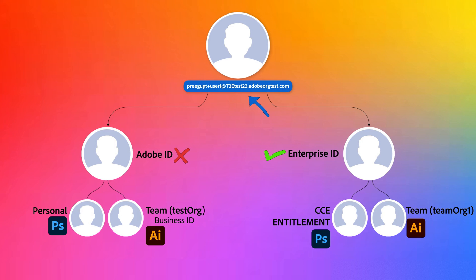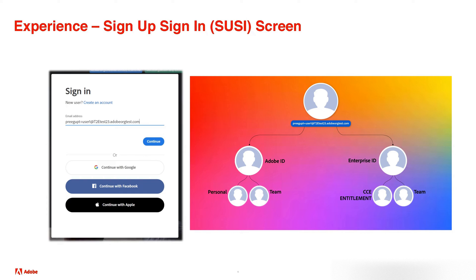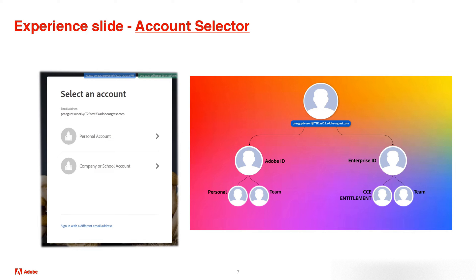Let's take a look at what this looks like, starting with the sign-in screen. The user types their email address — always the first step — and then clicks the continue button. This brings the user to the select an account prompt, also referred to as the account selector. The user is presented the option to select the desired account — this is the login account, an account with credentials. Since the user has both an Adobe ID (personal account) and an Enterprise ID (company or school account), they are presented a choice between the two. Note: many Adobe customers may only have an Adobe ID or an Enterprise ID — only in specific instances would a user see both account options.